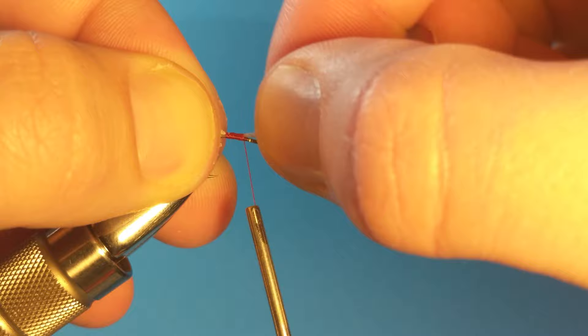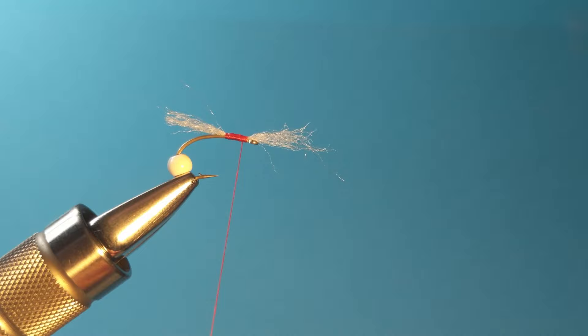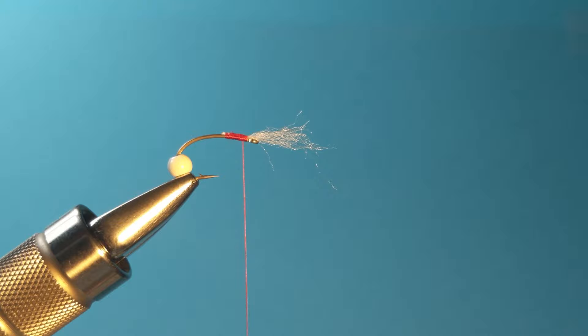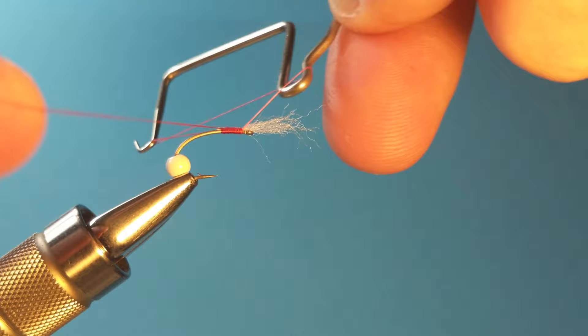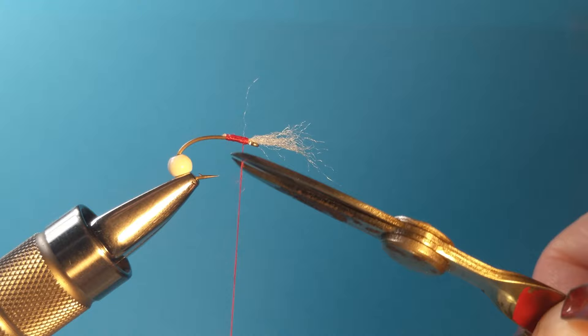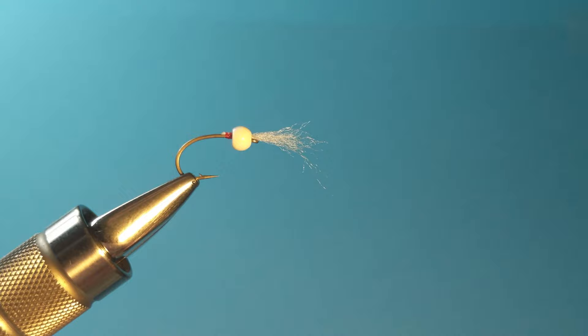All right, so now that we're done with this one we can cut this excess off. And do a quick whip finish because we need to tie in behind the bead now. All right, now we're going to cut this off. Slide that bead forward. And then we're going to tie in behind it.